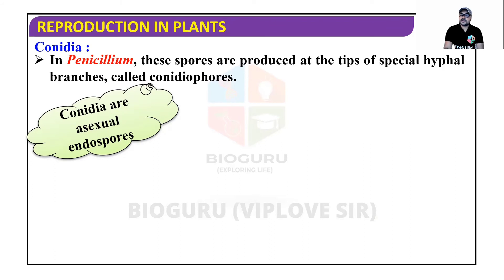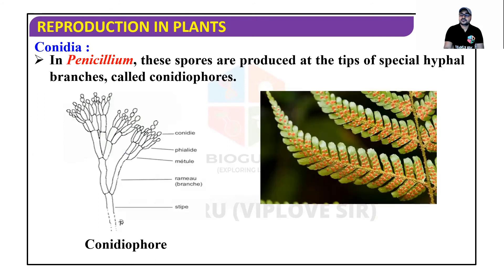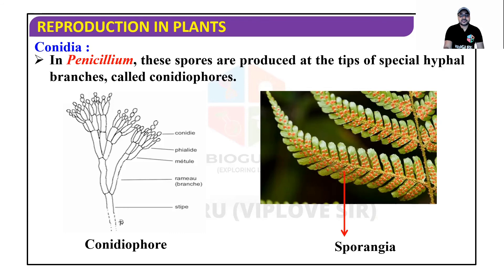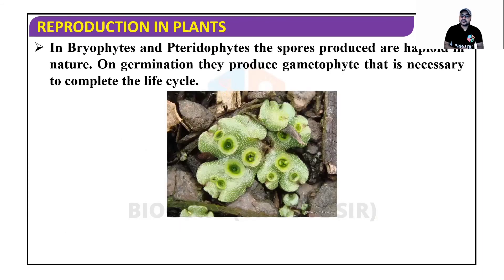Conidia are asexual exospores. In ferns, the reddish structures you may have noticed on the underside of fronds contain spores in sporangia. In bryophytes and pteridophytes, spores are also formed. In bryophytes and pteridophytes, the spores produced are haploid — meaning they have half the number of chromosomes.